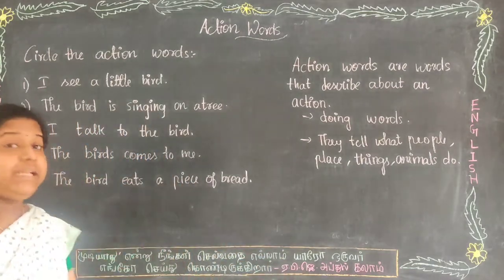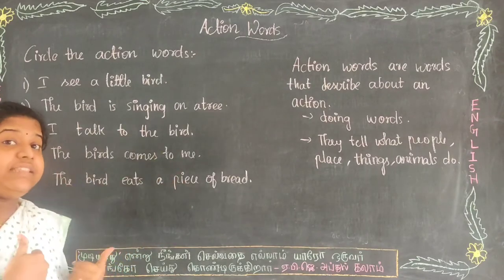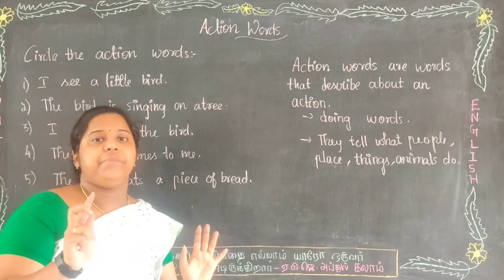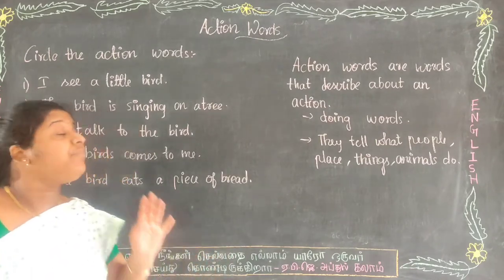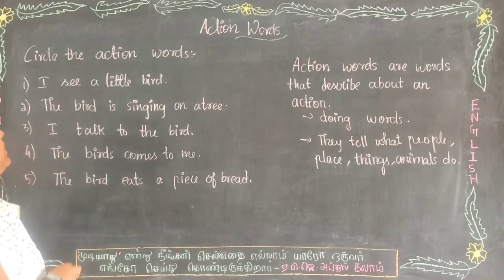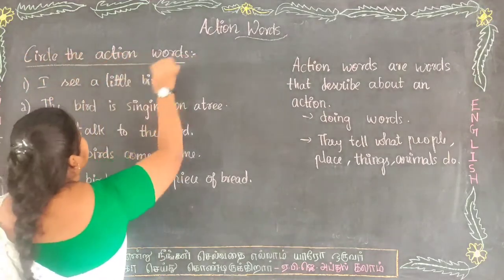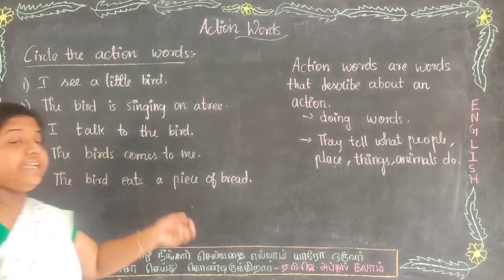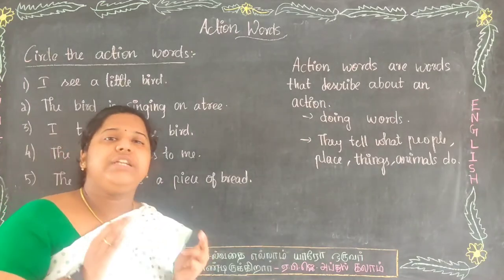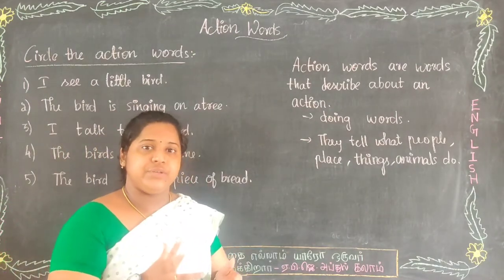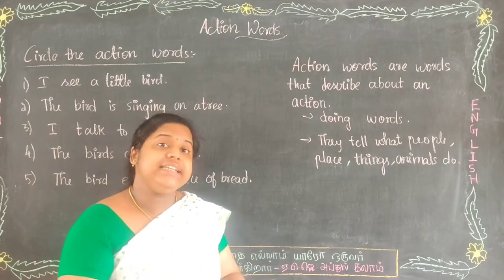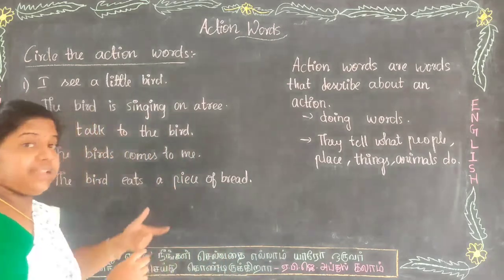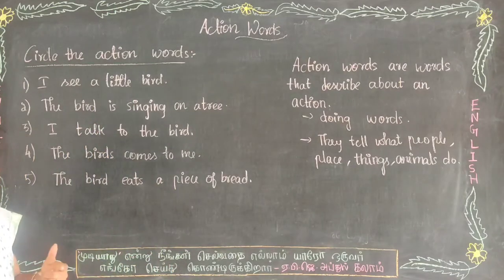Now we are going to identify the action words in these sentences. First sentence: I saw a little bird. So, 'saw' is the action word. It is an action word.